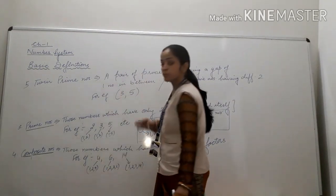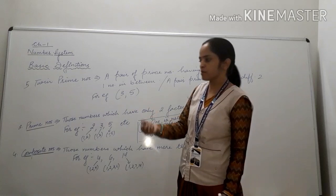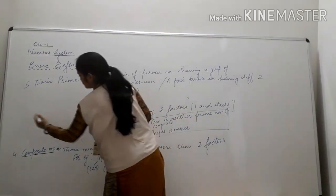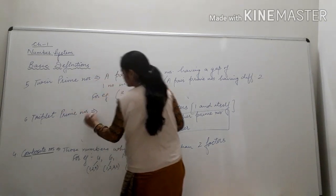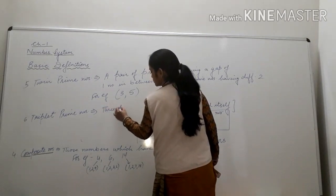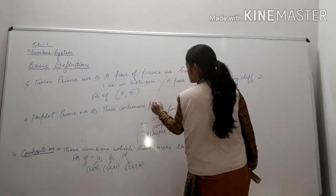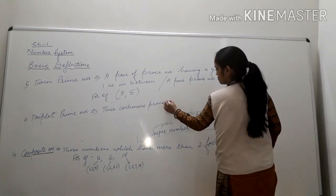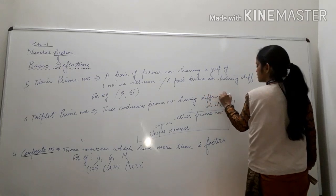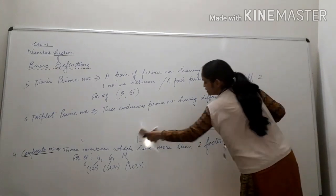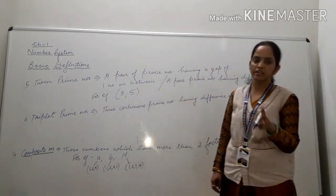In the same way, we have triplet prime numbers. This name is given but not used very commonly. Triplet prime numbers are three continuous prime numbers having a difference of 2 between consecutive numbers — meaning if you subtract any two consecutive ones, the difference must be 2.